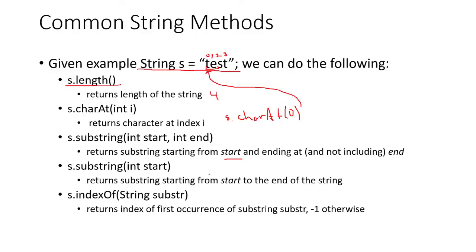Then, of course, there's indexOf, which returns the first occurrence of the substring. So if we tried to find the index of E, it would return 1 because that's the index that it's stored at. Note that if we tried to get the index of T, it would return 0 because that's the first index it's stored at, even though T is also stored over here at index 3.